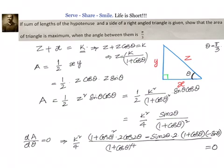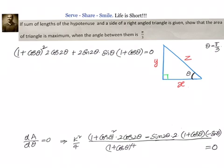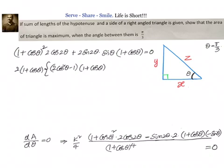Let us simplify the numerator by converting everything in terms of cosθ. We want to prove that cosθ = 1/2 when we solve this. We can take 2·(1 + cosθ) as a common factor. That leaves cos2θ written as 2cos²θ − 1, multiplied by (1 + cosθ).